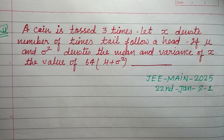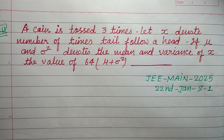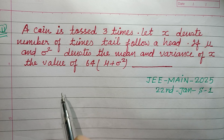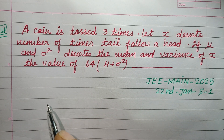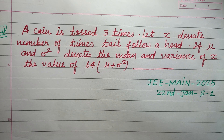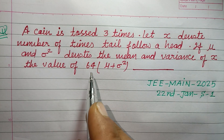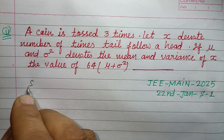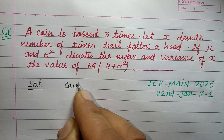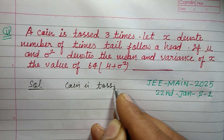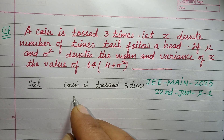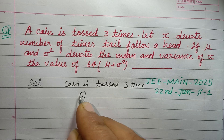Hello viewers, warm welcome to this YouTube channel. This question is from JEE Mains 2025, 22nd January Shift 1. A coin is tossed three times. Let X denote the number of times tail follows a head. If mu and sigma square denote the mean and variance of X, then find the value of 64 times mu plus sigma square.